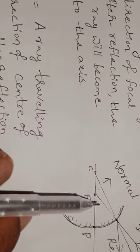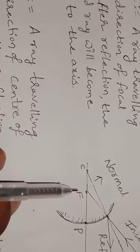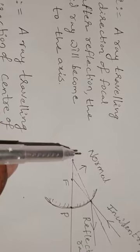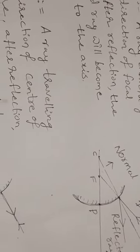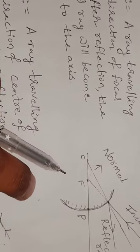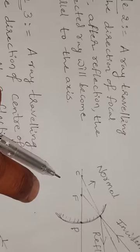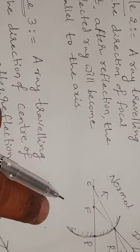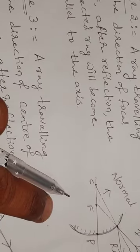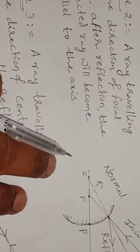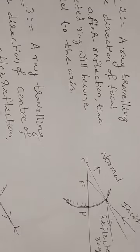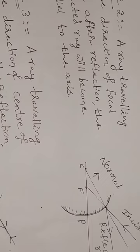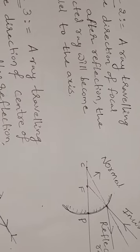In the case of a convex mirror, the image is always formed inside the mirror. That's why the focal point and the center of curvature lie inside the mirror. Whereas in the case of a concave mirror, except for one situation, in all remaining situations the image lies outside the mirror — that's why the focal point and center of curvature are taken as outside the mirror. So we take the focal point and center of curvature inside the convex mirror because the image is formed inside the mirror.